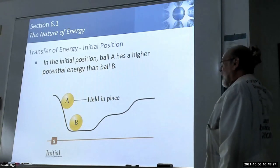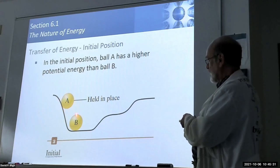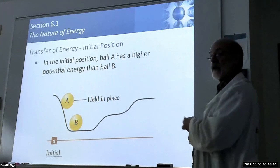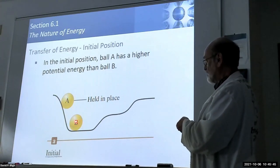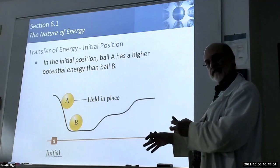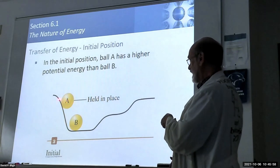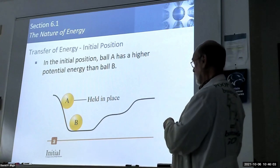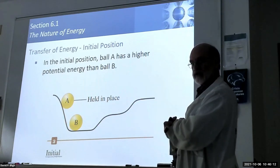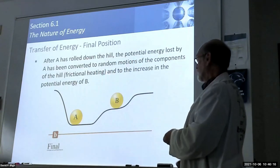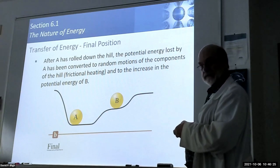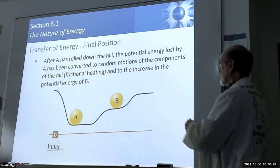Illustration of transferring energy: suppose we have ball A and ball B, both the same size, same material, same everything else except position. B is at one position, A is at a higher one being held in place. A has more potential energy than B due to their height difference. If we release A and it smacks B, transferring all of its energy, where would you expect B to go? It should go up to the same height. But in reality, B ends up lower - we've lost some energy in the transfer, usually due to friction.